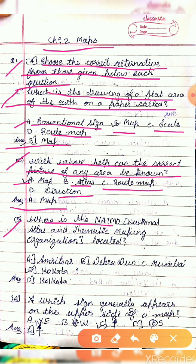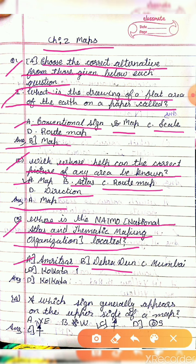Question 3: Where is the NATMO — that is, National Atlas and Thematic Mapping Organization — located? Option A is Amritsar, option B is Dehradun, option C is Mumbai, option D is Kolkata. The answer is D, Kolkata.